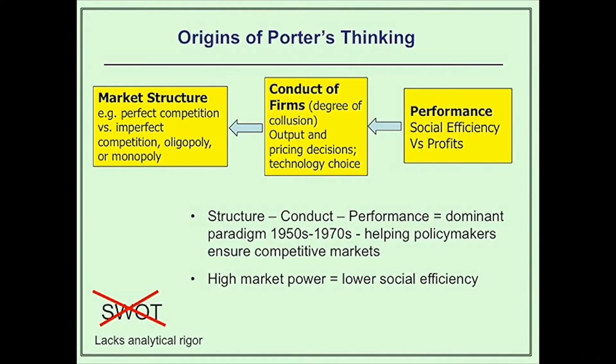Porter's thinking was based on the industrial organizational branch of economics. This was all about helping governments stop monopolistic behavior of firms and so not passing on value to consumers and therefore to society. The argument went that to ensure society gained from economic commercial activity, you had to ensure firms behaved appropriately and have market structures that ensured competition took place and pushed prices down to be affordable.